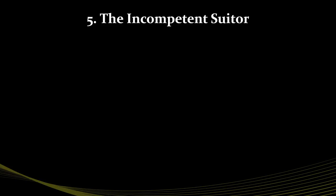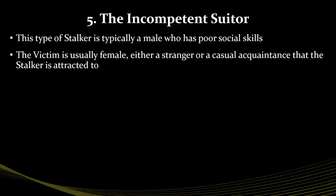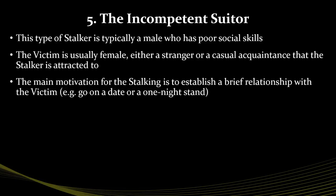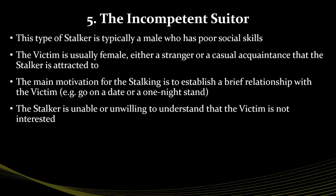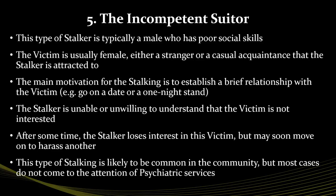The final type of stalker is the incompetent suitor. This type of stalker is typically a male who has poor social skills. The victim is usually female, either a stranger or a casual acquaintance that the stalker is attracted to. The main motivation is to establish a brief relationship with the victim. The stalker is unable or unwilling to understand that the victim is not interested. After some time the stalker loses interest in this victim but may soon move on to harass another. This type of stalking is likely to be common in the community, but most cases do not come to the attention of psychiatric services.